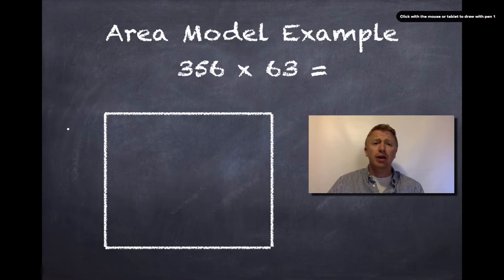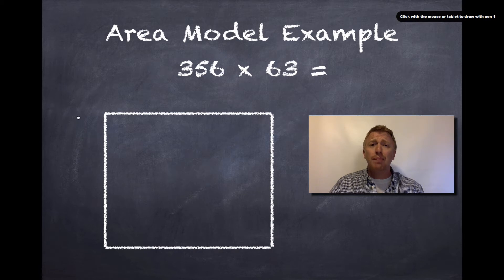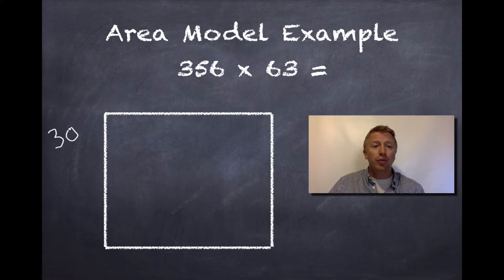Now, I'm not just going to write 356. No. I'm going to break that up by value. So, let's look at the 3 first. The 3 is in the hundreds place. What is it actually worth? Well, it is actually worth 300, not 3, because it is in the hundreds place.